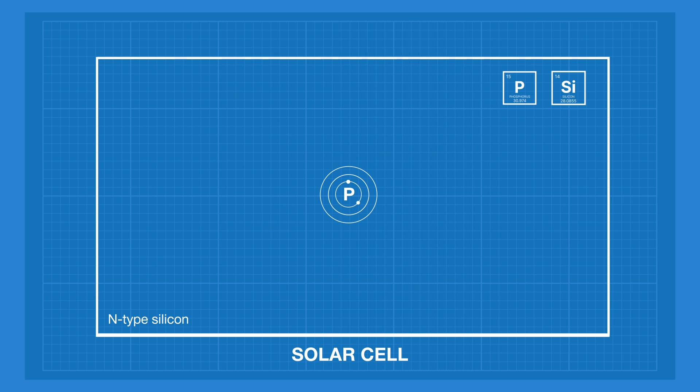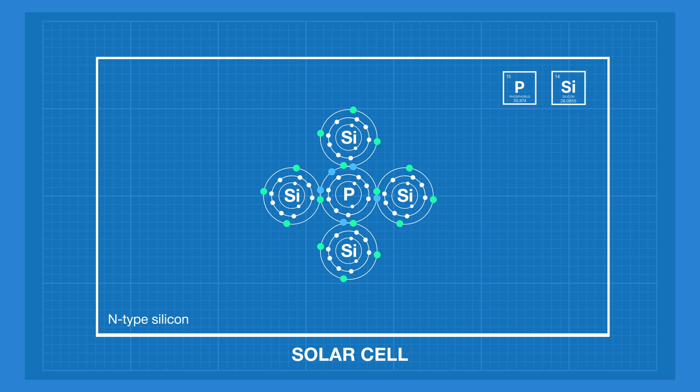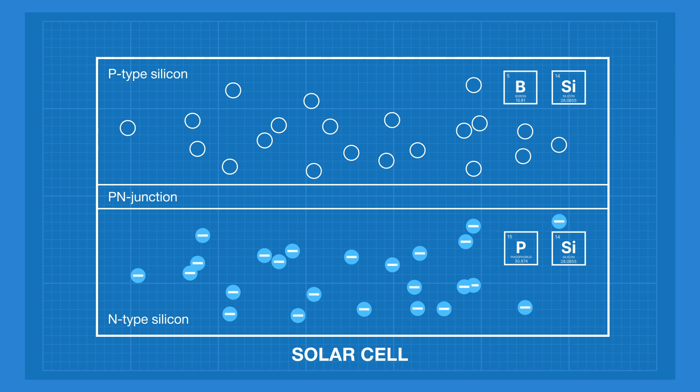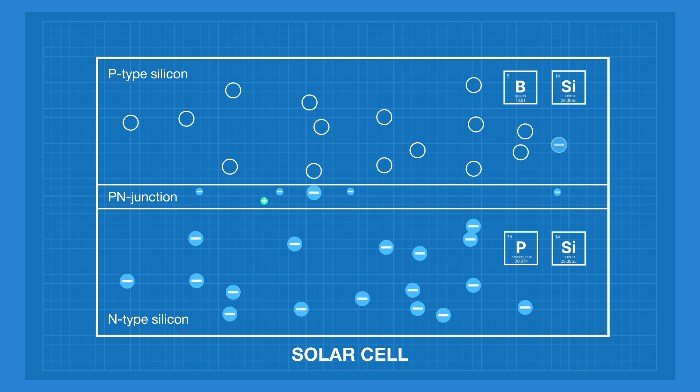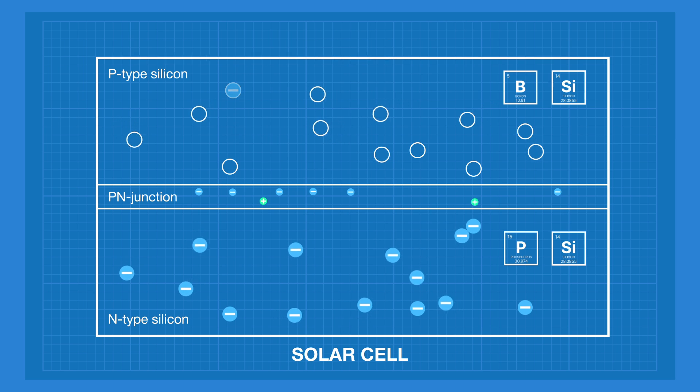N-type silicon, on the other hand, is doped with phosphorus gas. Phosphorus has five electrons in the outer shell. When it's paired with four atoms of silicon, one remains, which results in a negatively charged side. When the two of these silicon types meet, electrons start to wander across the junction.